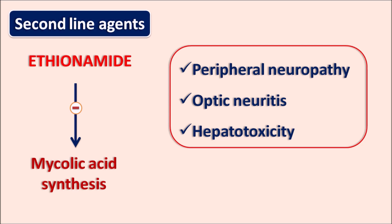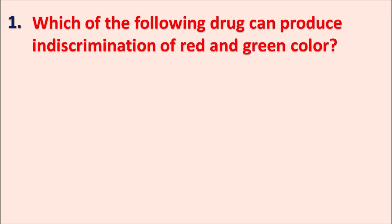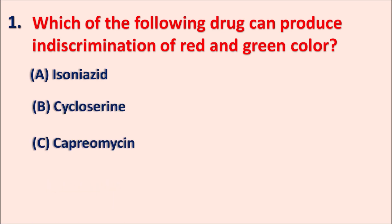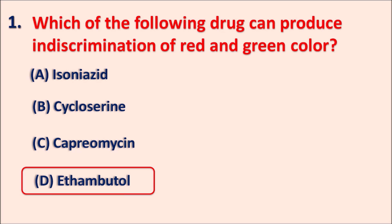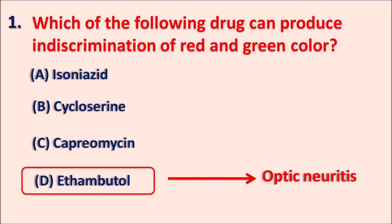Fluoroquinolones and macrolides can also be used as second line agents. Now, in question and answer format: which of the following drugs can produce indiscrimination of red and green color? Options are: A) isoniazid, B) cycloserine, C) capreomycin, D) ethambutol. The right answer is ethambutol. Ethambutol is a first line agent that produces optic neuritis, resulting in indiscrimination of red and green color. Among second line agents, ethionamide can also produce optic neuritis and color blindness.